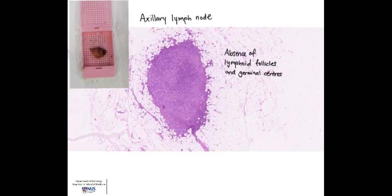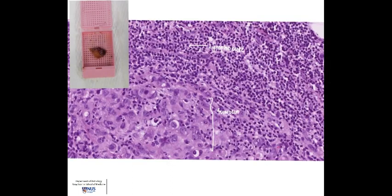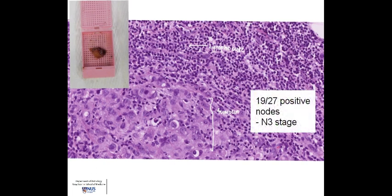At low power, there is an absence of lymphoid follicles and germinal centres. Zooming in, we see malignant cells with large nuclei surrounded by lymphocytes. After examining all 27 lymph nodes submitted for processing, 19 nodes were deemed involved by tumour. Thus, the nodal stage is N3.